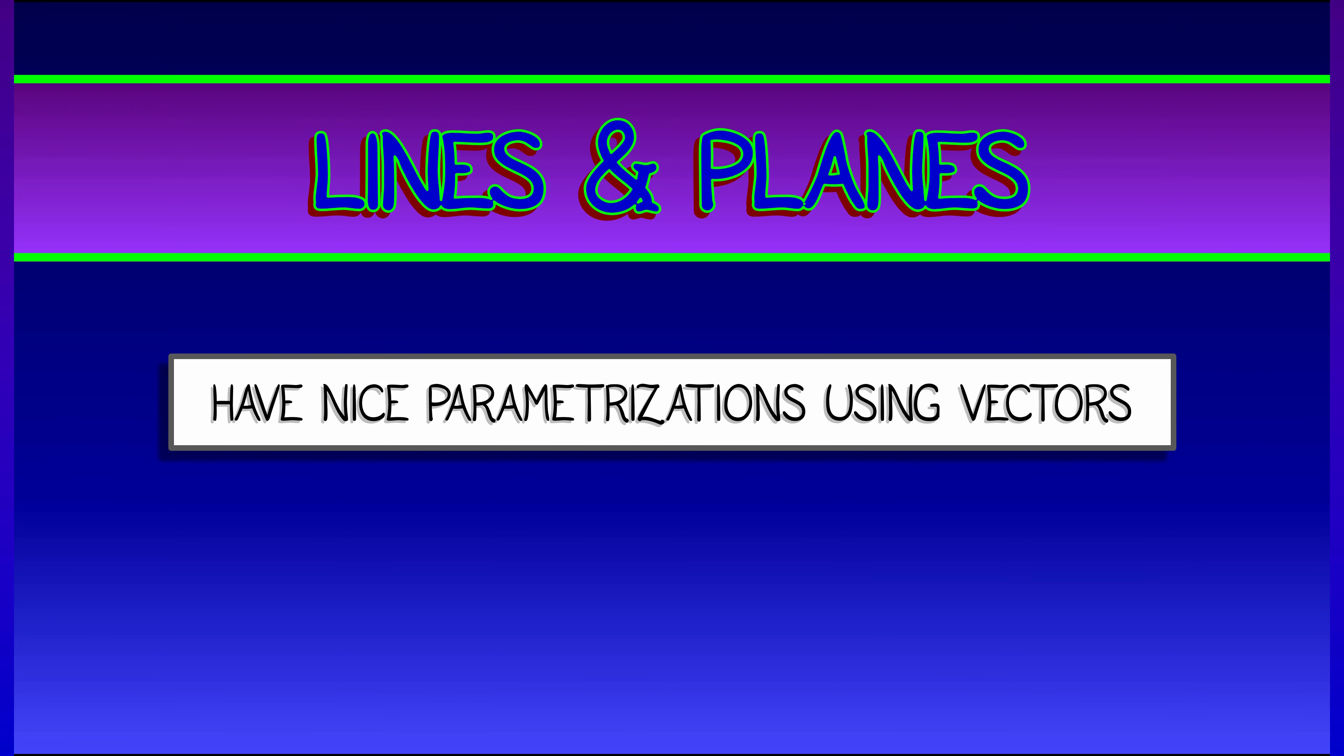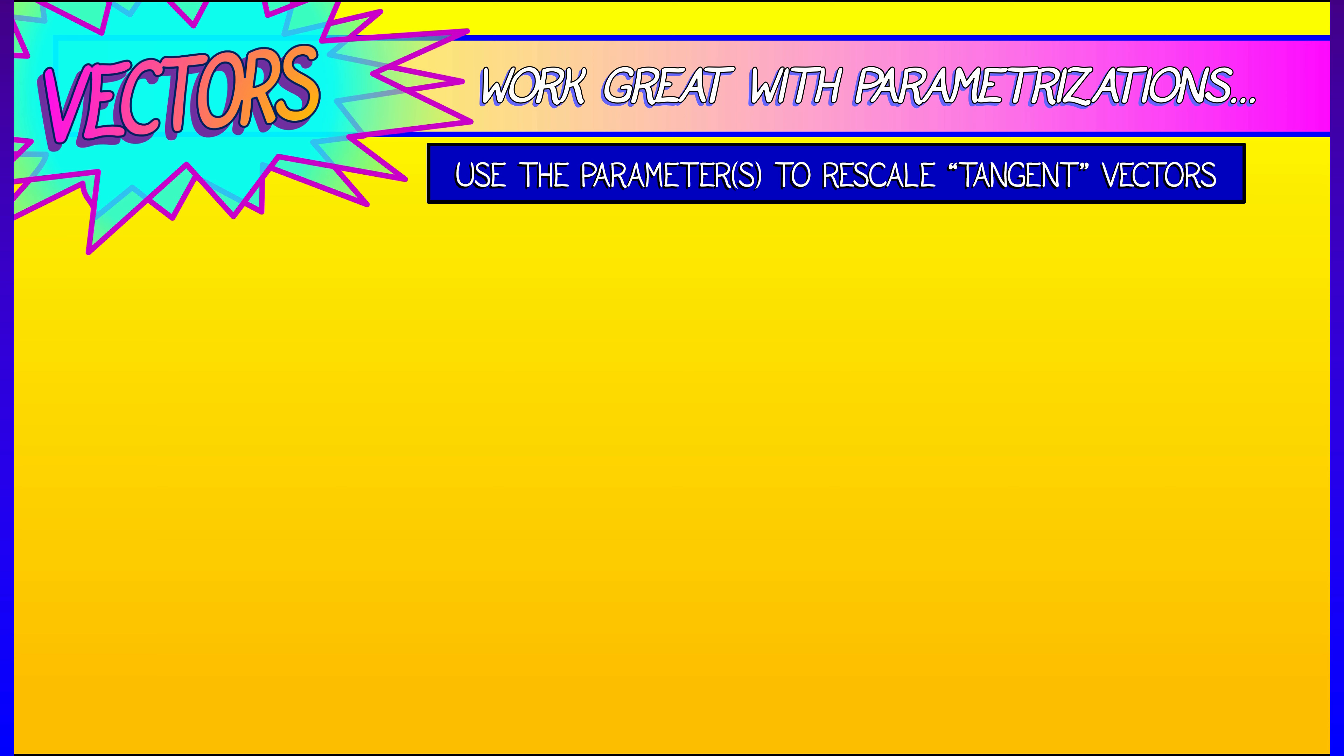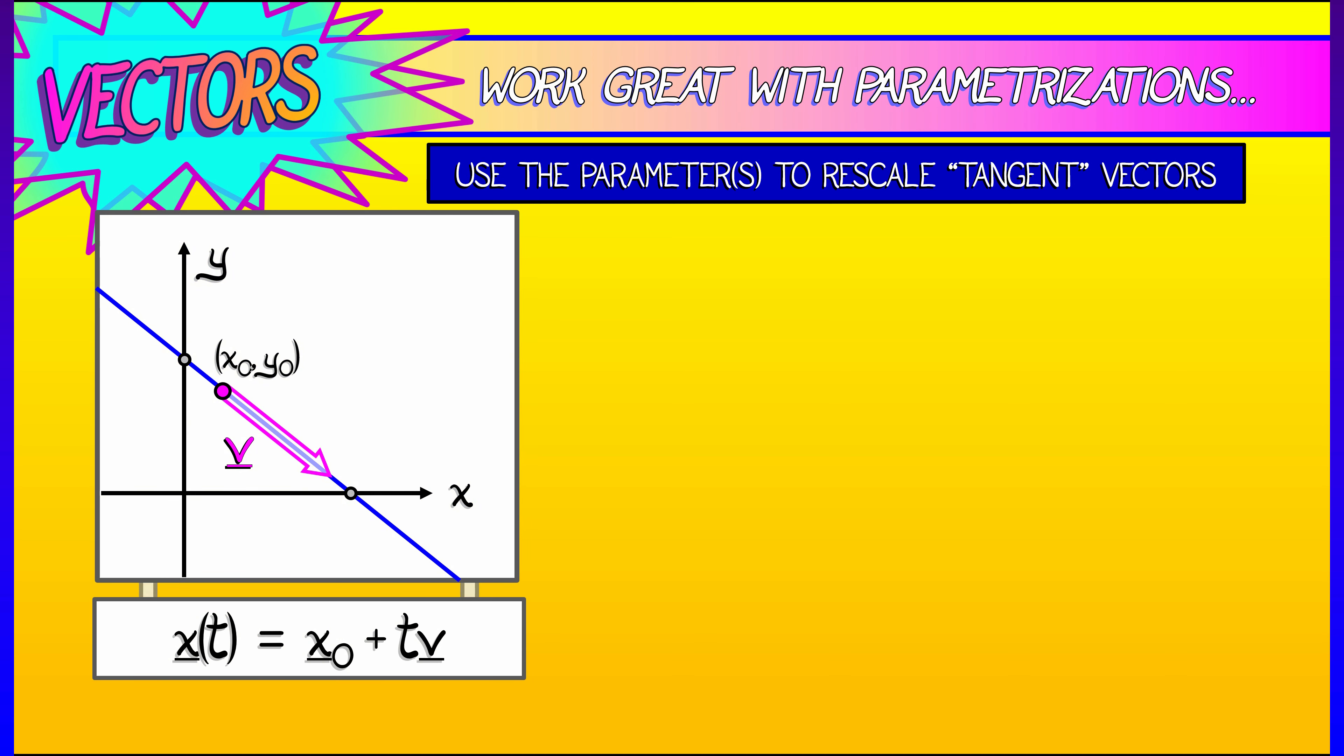Now lines and planes have really nice parameterizations using vectors instead of some of that sloppiness we had earlier in terms of directions or multiple slopes. Let's think about how vectors work to parameterize lines and planes. You use the parameter to rescale tangent vectors. For a one-dimensional line in n-dimensional space that is parallel to a vector v and passes through a point x0, you can describe the points on that line parametrically in vector notation, saying that x(t) = x0 + tv. When t equals zero, you're at the point x0, and as t evolves, you're moving parallel to the v axis.